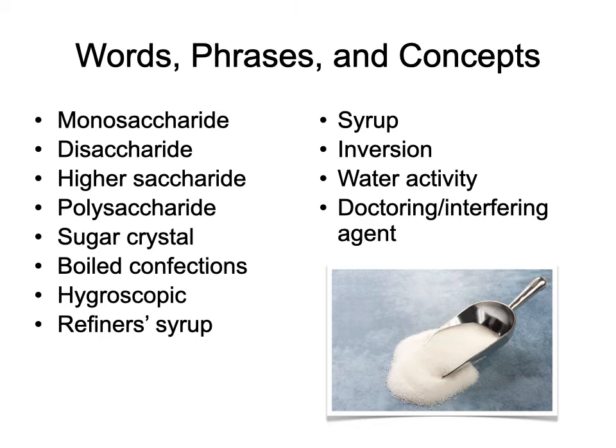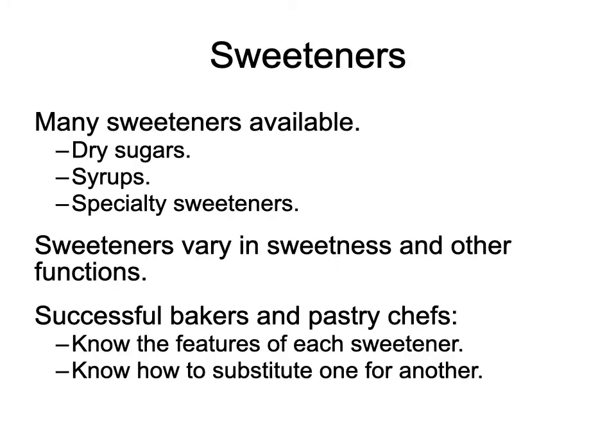We'll look at water activity and the use of doctoring or interfering agents — using sugar as a doctoring agent to help control sugar crystallization. There are a lot of products we make that we want crystallized and a lot we don't want crystallized — we want them smooth and non-crystalline. There are many types of sugars: dry sugars, syrups, and specialty sweeteners, which can be natural or artificial.